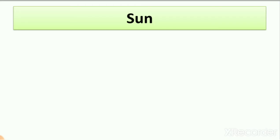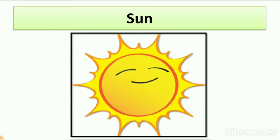Our first hard word is 'sun.' The spelling is S-U-N. The sun is a big yellow ball of fire. You can see the picture of the sun here. We already learned about sun today during revision, so you can easily understand.